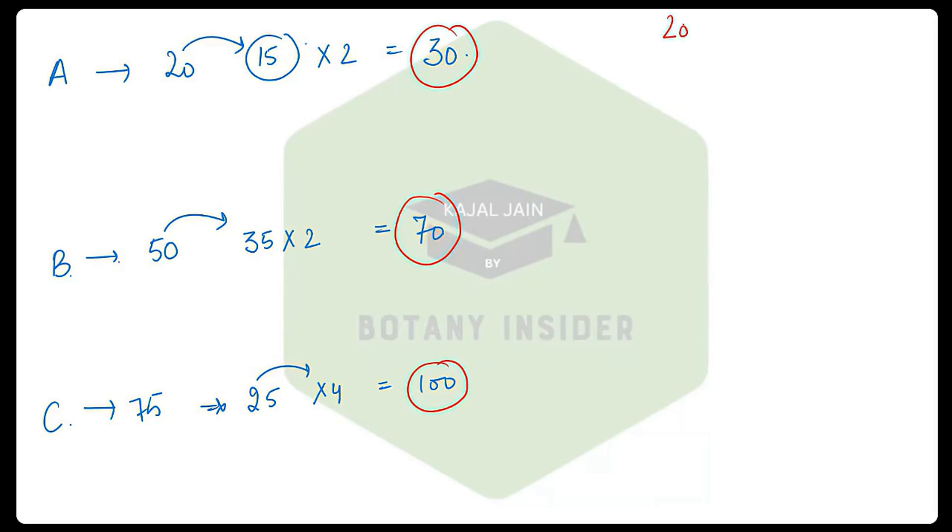From Part A you have negative marking of 0.5. In Part B you have a negative of 0.5. In Part C you have a negative of 1—one-fourth of the marks given for a correct answer.